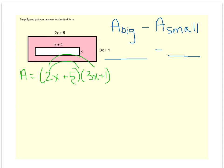First, outside, inside, last. 2x times 3x is 6x squared. 2x times 1 is a plus 2x. 5 times 3x is a plus 15x. And 5 times 1 is plus 5.